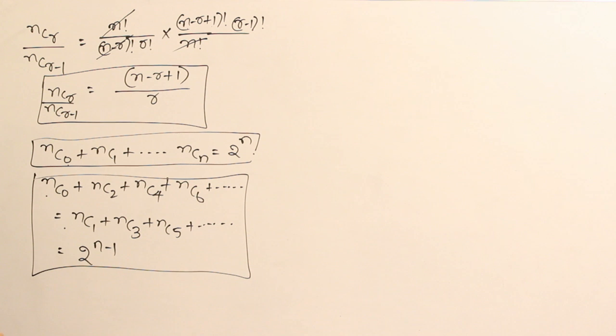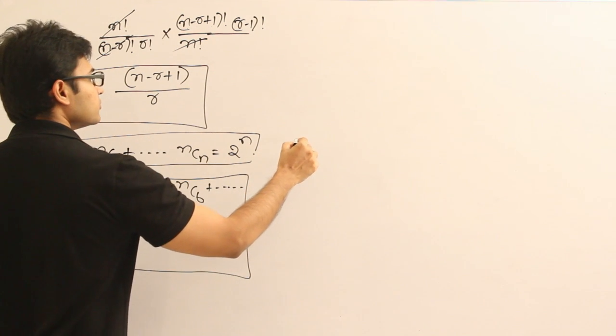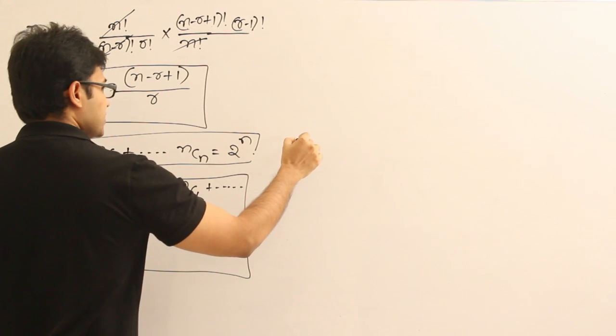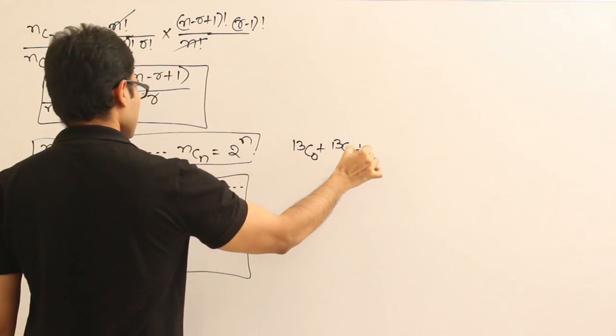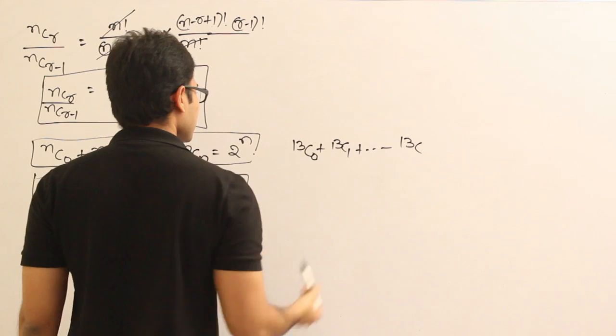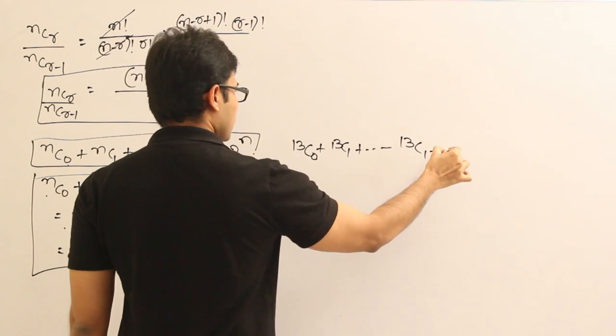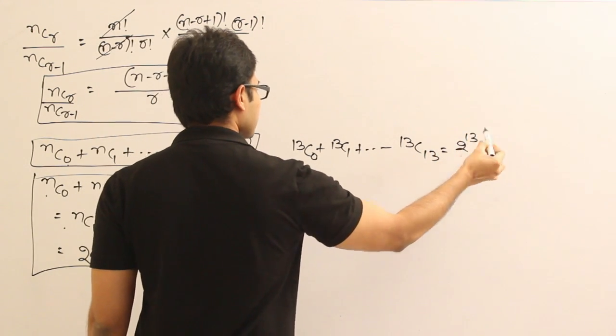Now, what I mean to say is, from this one what you can understand is this. So, if you have let us say 13C0 plus 13C1 plus so on plus 13C13, then what do you get? It is 2 power 13.